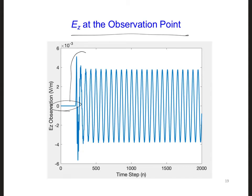Then there are some transient fields that are excited by the transmitter being turned on and they propagate through the observation point. And then we can see that we reach a sinusoidal steady state.